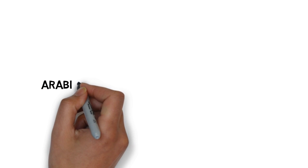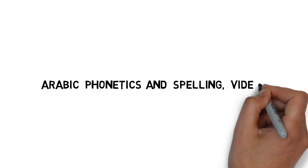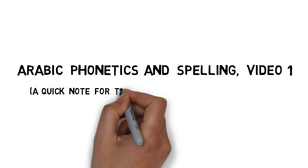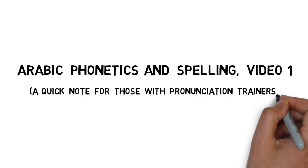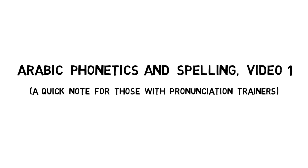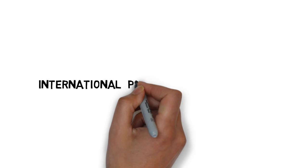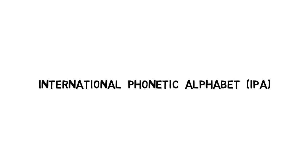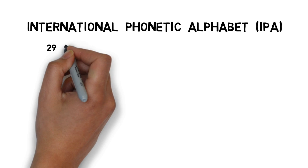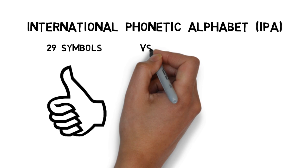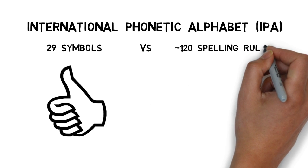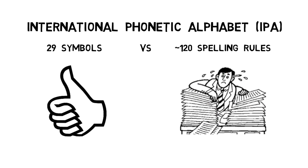Hi, this is Gabe at FlumeForever.com. In these four videos, I'm going to show you the bare essentials of phonetics and spelling for Arabic. If you're using one of my pronunciation trainers, don't worry about memorizing this stuff — the trainer will do that for you. Just watch and pay attention. Everything you see here will show up sooner or later within the trainer. I'll be going through Arabic using the International Phonetic Alphabet, or IPA. I do this because it lets us simplify our discussion quite a bit, since I only need to talk about 29 symbols, many of which you know already, instead of trying to wade through nearly 120 spelling rules. So let's get started.